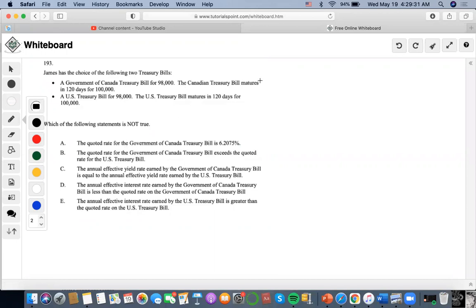For Canada's quoted rate equation, it's always 365 over, whereas the US is always 360 over, same placement for the number of years matured times. The numerator for this second part is the same...